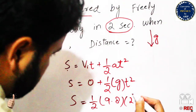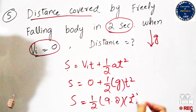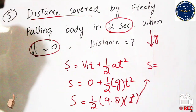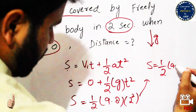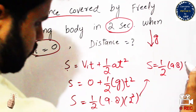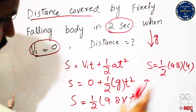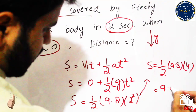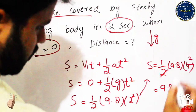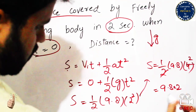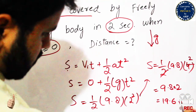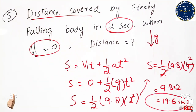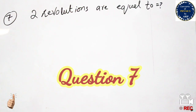So s = ½ × 9.8 × t². With t = 2 s, t² = 4. Therefore s = ½ × 9.8 × 4 = 9.8 × 2 = 19.6 meters.